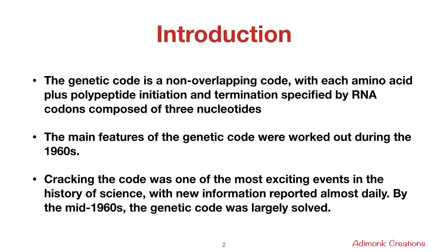Let's start with the introduction. The genetic code is a non-overlapping code, with each amino acid plus polypeptide initiation and termination specified by RNA codons composed of three nucleotides. The main features of the genetic code were worked out during the 1960s, and cracking the code was one of the most exciting events in the history of science, with new information reported almost daily.